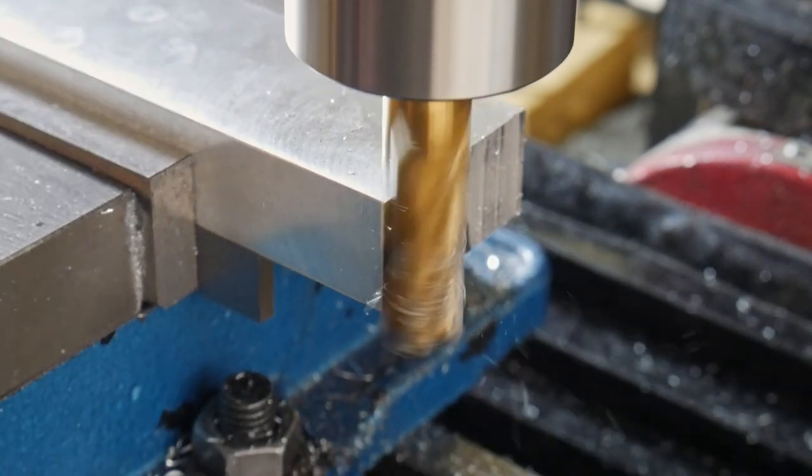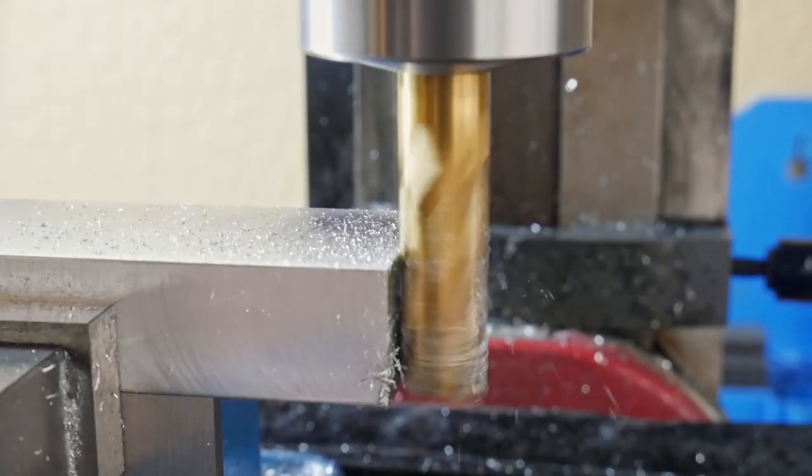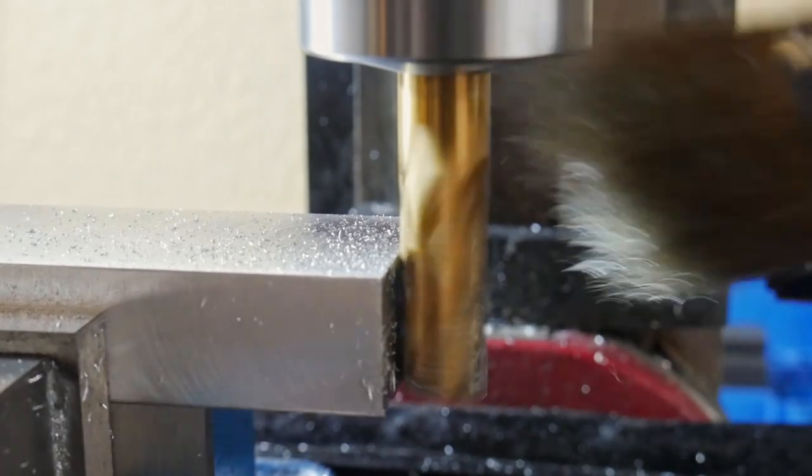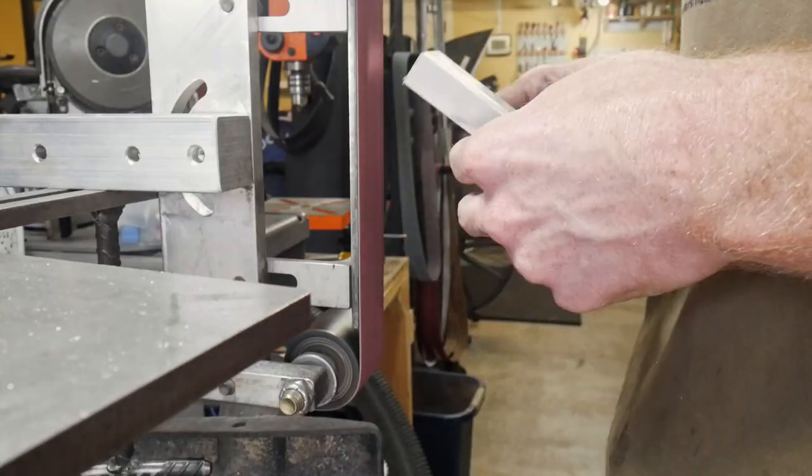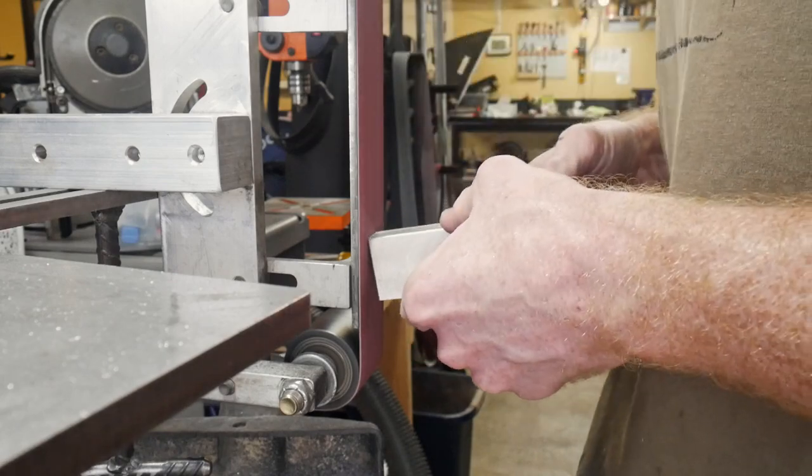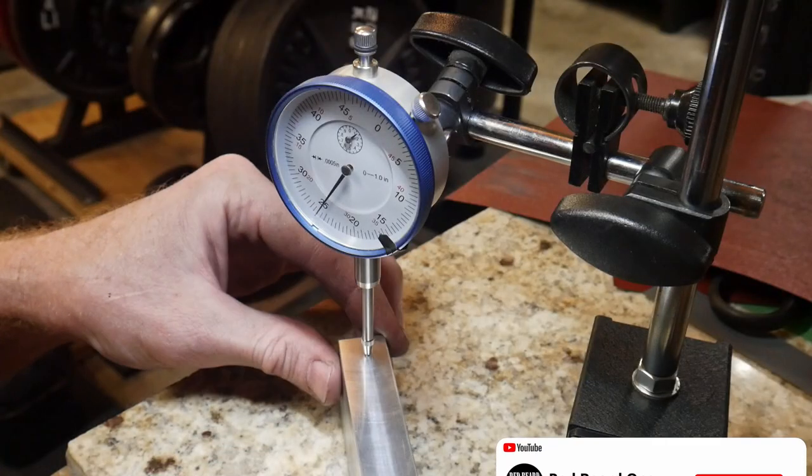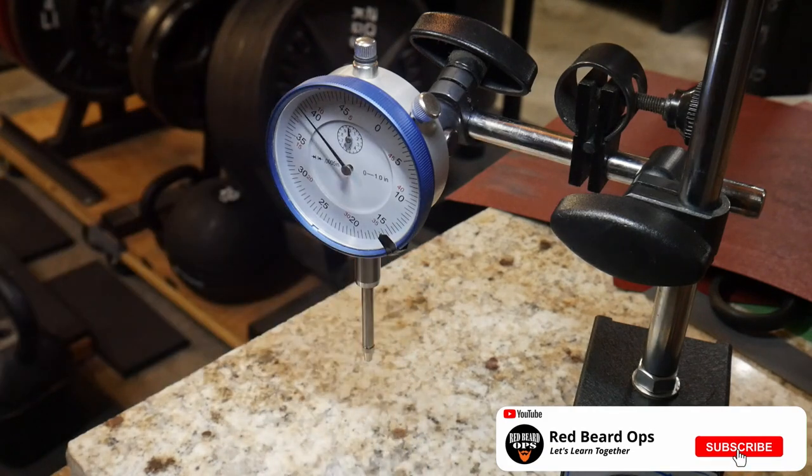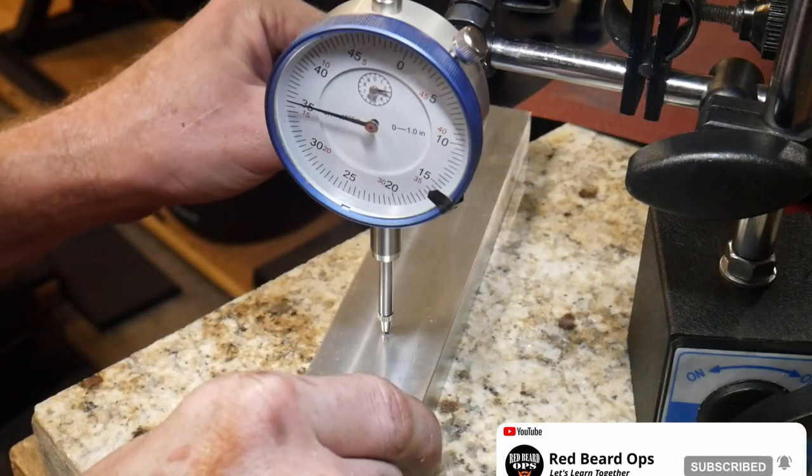After we got all four sides squared up to each other, I took a little bit of time to square up the ends and then took this guy over to the belt sander to round off all the corners and knock off any burrs that were accumulating during the machining process. I want to point out here that I am not a machinist, but the accuracy achieved with this block is more than adequate for the project that we are tackling today.